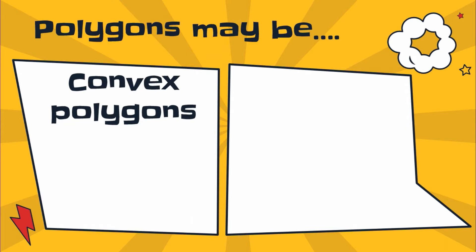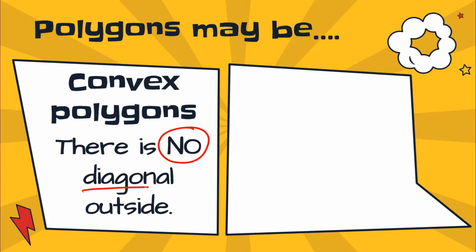So now, what are the different classifications of the polygons? Polygons may be convex polygons. When we say convex polygons, there is no diagonal outside. Recall what is a diagonal: the diagonal is the line segment drawn from one vertex to the opposite vertex. We call it convex if there's no diagonal outside. In other translation, all the diagonals when we draw all the diagonals are inside, found in the interior part of the polygon.